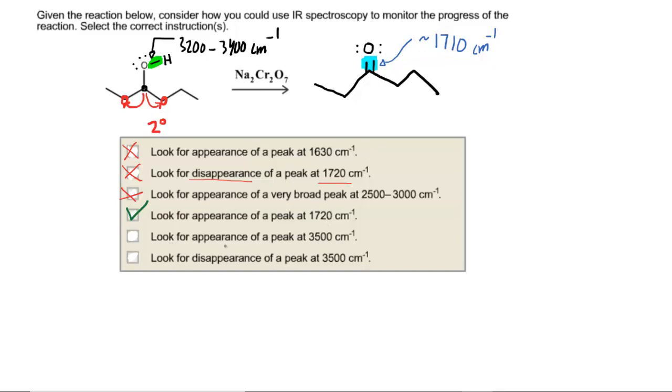The next answer box, look for appearance of a peak at 3500. Nope, we did not have a bond whose infrared signal would be at 3500 appear in the reaction. But then the final box says look for a disappearance of that same peak at 3500. Now we claim that the bond would be anywhere from 3200 to 3400, but some books go all the way up to 3600 especially if the molecule's in the gas phase, and so this seems reasonable that that signal would be a disappearance.